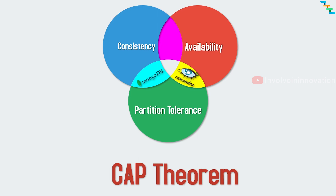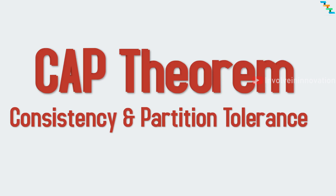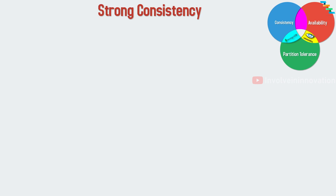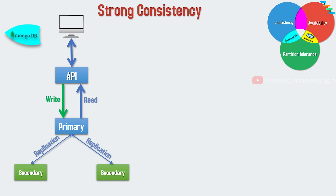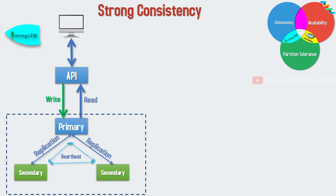Now we will see about strong consistency. MongoDB is a NoSQL document database with only a single primary node where all reads and writes happen from the application API by default. There can be more than one secondary node. MongoDB is a single-master system, making it a strongly consistent database by default. The primary and secondary nodes are grouped together to form a replica set, which enables you to create up to 50 copies of the data provisioned across separate nodes, data centers, or different geographic regions.